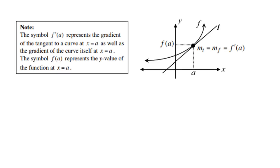Looking at that sketch, note that the symbol f'(a) represents the gradient of the tangent to a curve at the point where x equals a, as well as the gradient of the curve itself at the point x equals a. Remember, m stands for gradient. And f(a) represents the y-value of the function at the point x equals a.